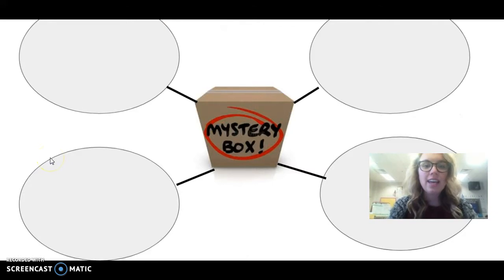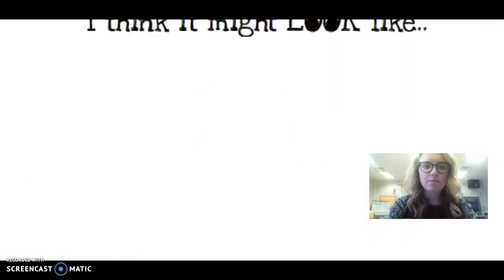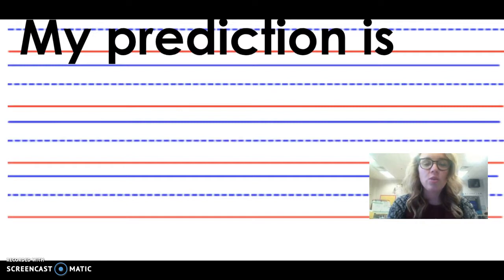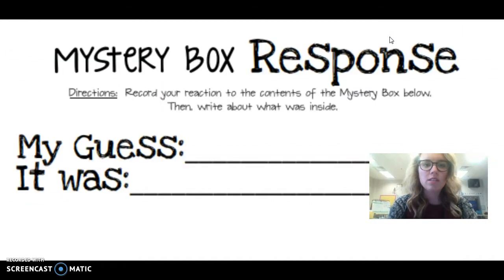And then, together, you are going to use this bubble map to decide what you think might be in the box. You're going to draw a detailed picture of what you think it might look like. And then, together, you are going to write a sentence about what you think your prediction is using the sentence starter, "My prediction is." After we open our boxes, we're going to determine if our guess or our prediction was correct or incorrect.